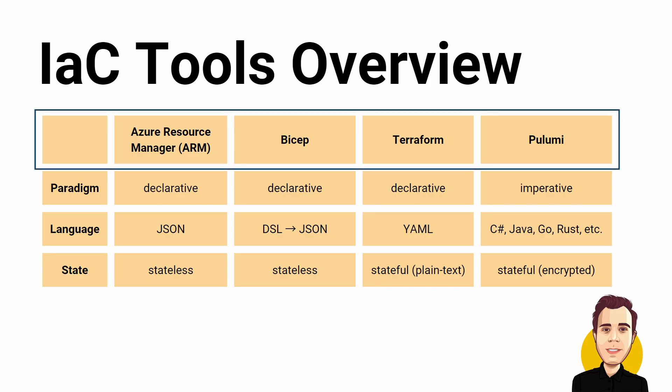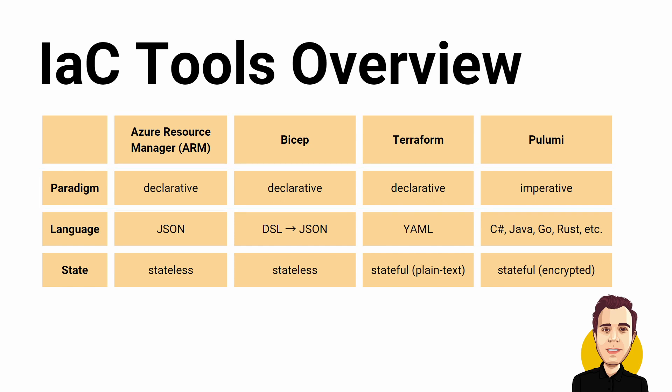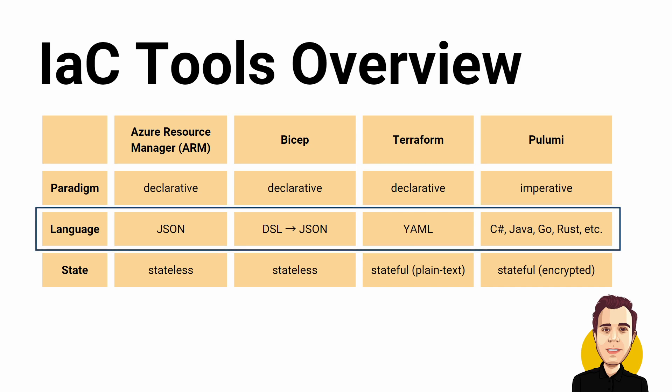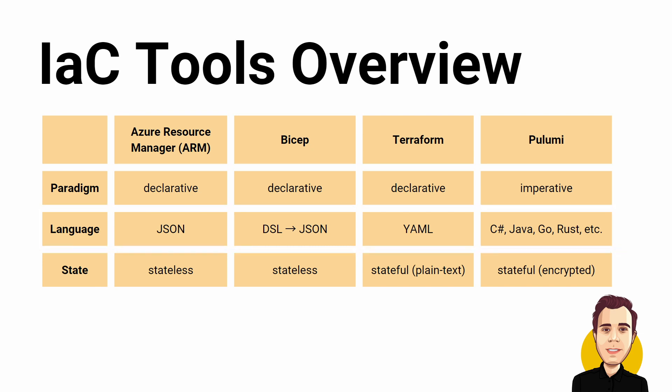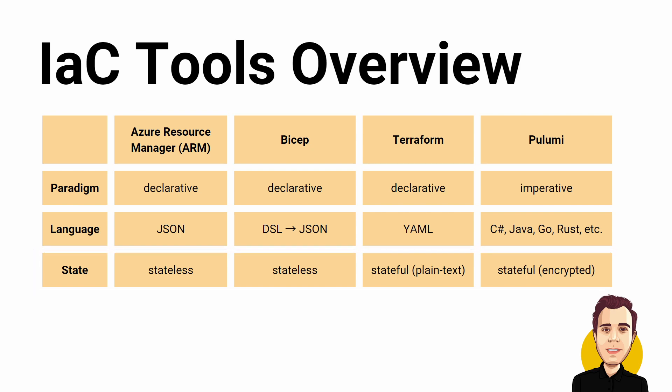Looking at those four tools, there are different levels of abstraction — declarative and imperative tools using different configuration formats such as JSON, YAML, a popular programming language, or a DSL. Some of the tools keep state, meaning they know what was deployed, and others are stateless. There are many more Infrastructure as Code tools available. The goal here is to show a quick overview of the different toolings. Each tool uses a unique approach and it depends on many factors which tooling is the best solution for any given scenario. In a future video of this series, I will take a closer look at each of these tools and use them to create and manage Azure resources.